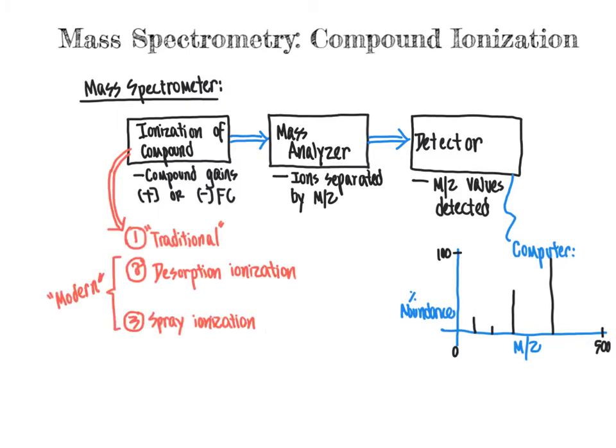The three main techniques we are going to talk about with regard to ionization are: traditional, and then the two modern methods — desorption ionization and spray ionization. In current chemical biology applications, these modern methods are much more widely used and widely applicable than the traditional method. So while I'm going to briefly mention the traditional method, it is typically not as widely used or important in the fields of chemical biology as these more modern methods.